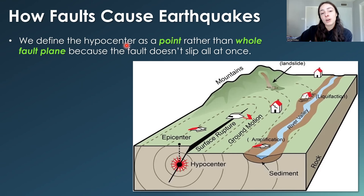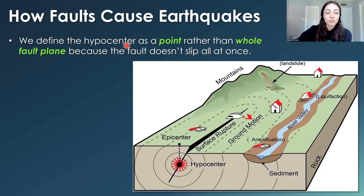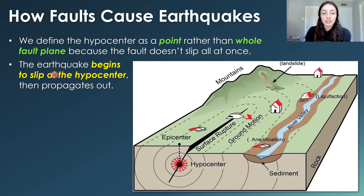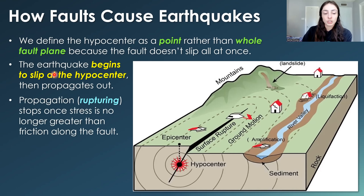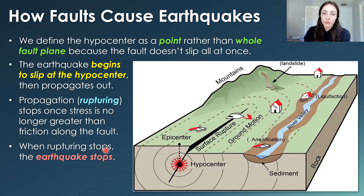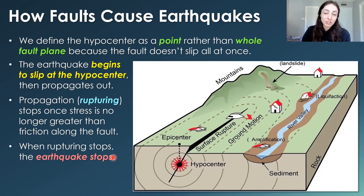We define the hypocenter as a point rather than the whole fault plane because the fault doesn't slip all at once. The earthquake begins at the hypocenter and then propagates out — this propagation is called rupturing, and it stops once the stress is no longer greater than the friction along the fault. This is why larger faults that allow longer rupturing cause potentially larger and more damaging earthquakes.